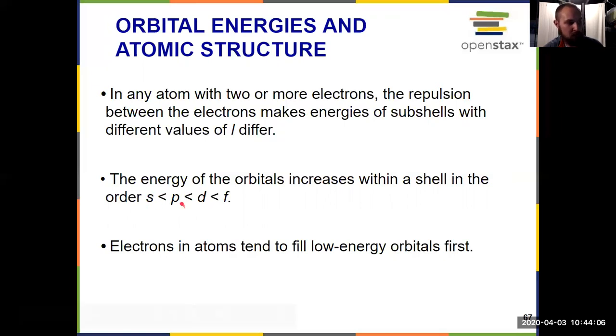S is the lowest energy, that's an L value of zero, followed by P, L value of one, D, L value of two, F, L value of three. So we increase in energy going S to P to D to F. And because chem is all about reaching the lowest energy state possible, we have to account for those things, the value of N and the value of L, because when we're putting electrons into an atom, they fill the lowest energy orbitals first.